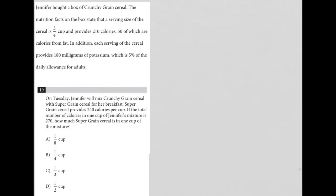So this question says Jennifer bought a box of crunchy grain cereal. The nutrition facts on the box state that a serving size of the cereal is three fourths cup and provides 210 calories. So I'm going to just write that down. So three fourths cup equals 210 calories, 50 of which are calories from fat. So out of that 210, we get 50 fat calories.